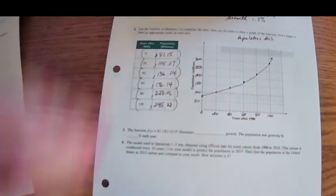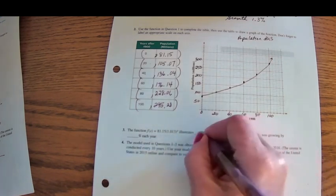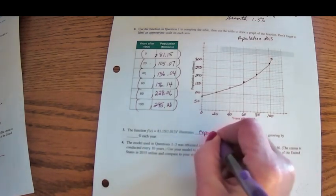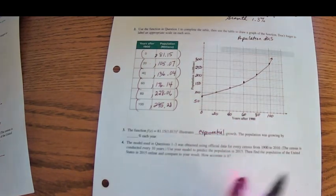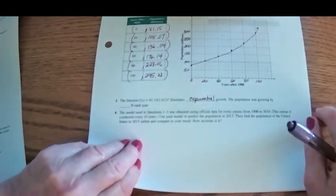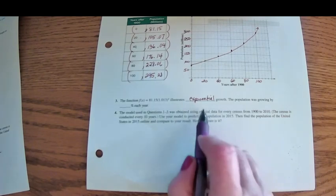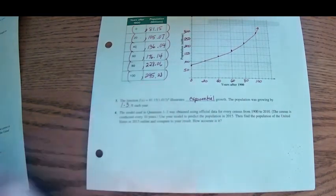All right, so let's fill in here. The function f(x) equals 81.15 times this illustrates exponential growth. It's called exponential because the exponent has the variable. The variable is up in the exponent. That's why it's exponential growth. And our population was growing by 1.3% per year.